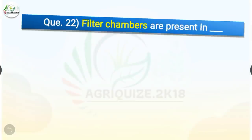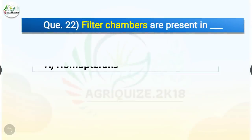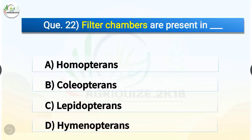Question number 22. Filter chambers are present in which order? The options are homopterans, coleopterans, lepidopterans, or hymenopterans. The correct answer is option A, homopterans. Filter chambers are present in homopterans. The filter chamber allows the elimination of excess water and soluble carbohydrates to prevent excess dilution of hemolymph.